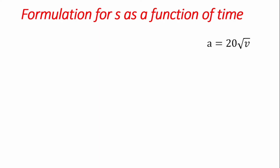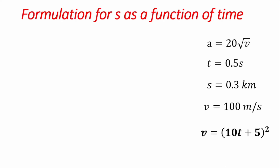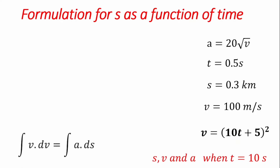Next, we want to find displacement as a function of time. Reviewing our available equations: the relation v dv equals a ds does not contain time, so it is not useful here. The relation a equals dv/dt does not contain displacement, so it cannot give us s(t) directly. The relation a equals the second derivative of s with respect to time could work, but requires integrating twice.